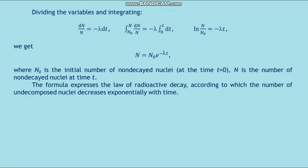Dividing the variables and integrating, we get N = N₀ × e^(-λt), where N₀ is the initial total number of non-decayed nuclei at time t = 0, and N is the number of non-decayed nuclei at time t. The formula expresses the law of radioactive decay, according to which the number of undecomposed nuclei decreases exponentially with time.